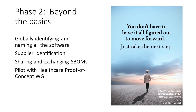In our second year, as we move into phase two, we're going to explore some of the unresolved problems that we addressed in phase one, along with a few new ones that have come up. It turns out that globally identifying and naming all software components is a difficult problem, so we continue to work on that. We're also looking at how to share and exchange SBOMs. As part of the global identification and naming problem, we're considering supplier identification — a supplier being someone who produces a software system and therefore produces an SBOM. Our working group is also working hand in hand with the healthcare proof of concept working group to test and validate the models we've designed with a real-world test in the medical device manufacturer space.